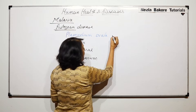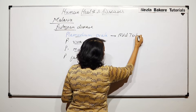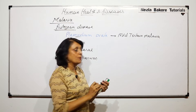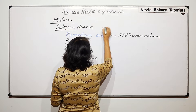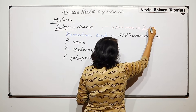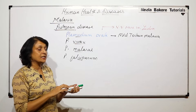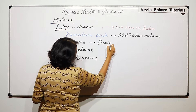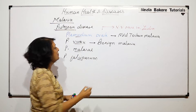Plasmodium ovale causes mild tertian malaria and is very rarely found in India. Plasmodium vivax causes benign malaria, also known as benign tertian malaria.